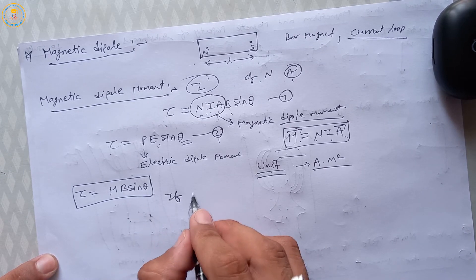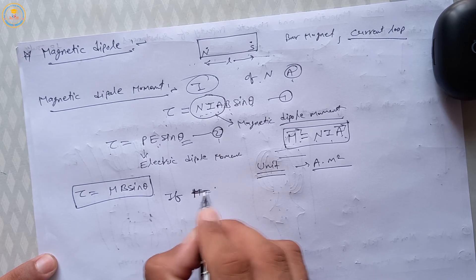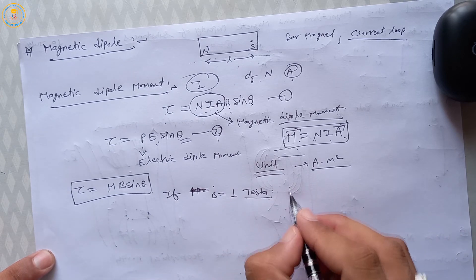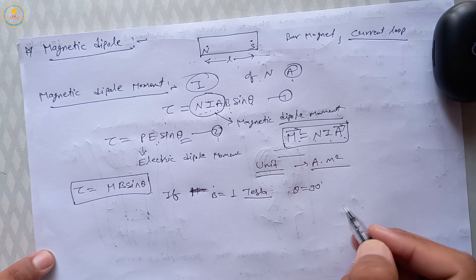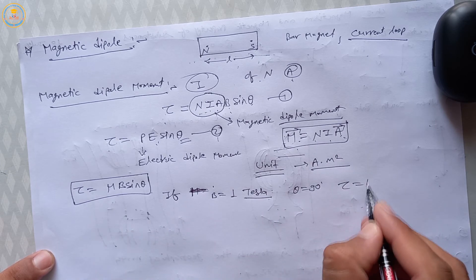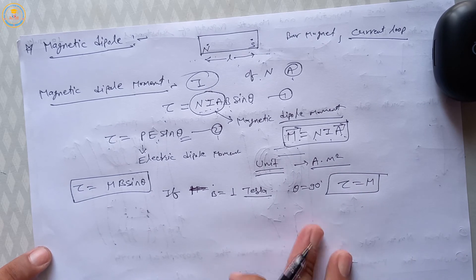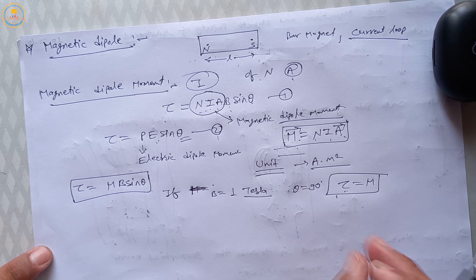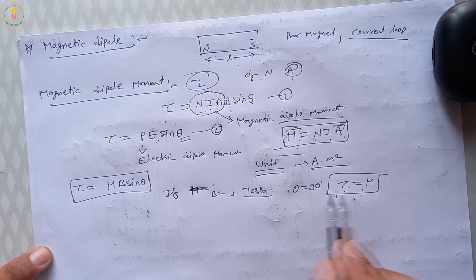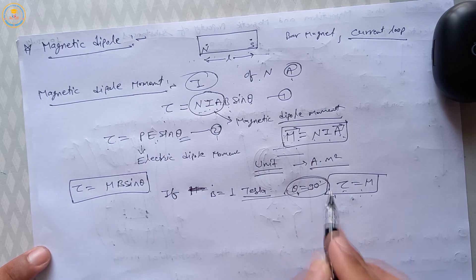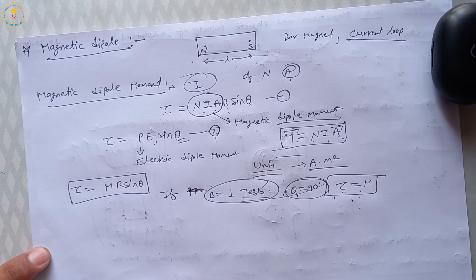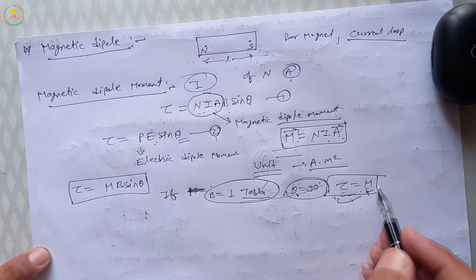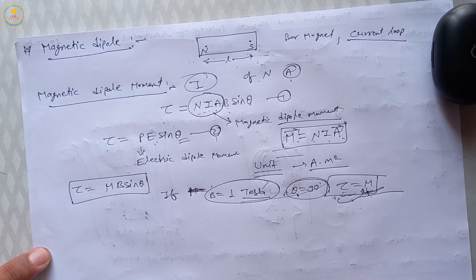Applying conditions: if B equals 1 Tesla (the unit of magnetic field) and θ equals 90°, then sin 90° equals 1, so τ equals M. Therefore, the torque on a magnetic dipole placed perpendicular to a uniform magnetic field of unit strength is equal to the magnetic dipole moment.